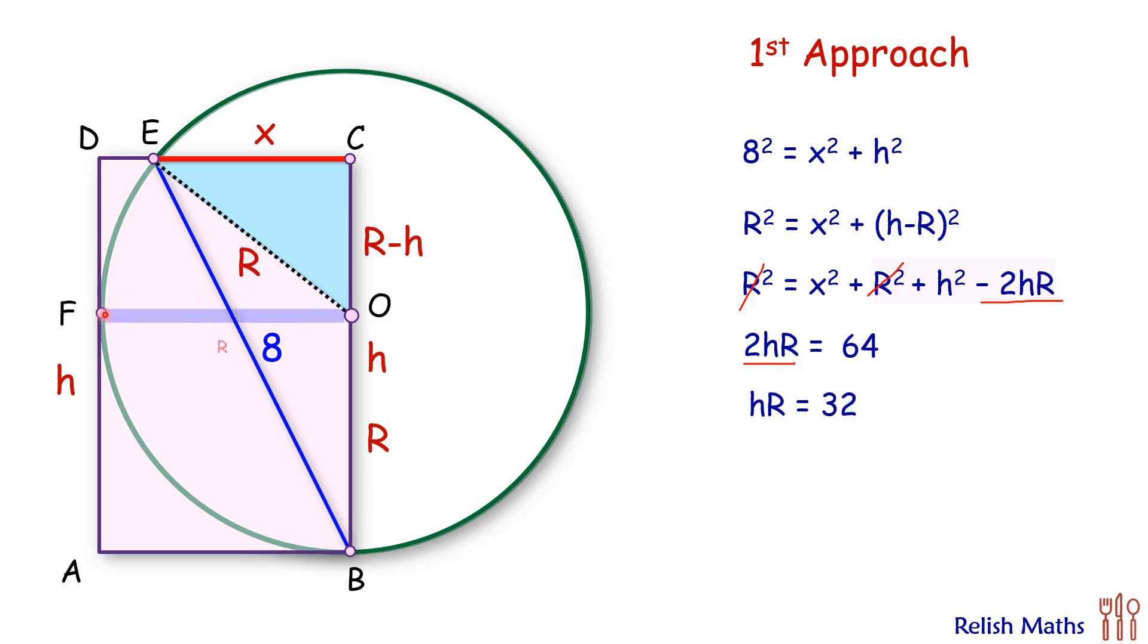Now if we see here, FO is the radius of the circle, so thus AB is also radius of the circle. In this rectangle, we get the length as h and width as R. So h times R is nothing but the area of the rectangle. So our answer, the area of rectangle, is 32 cm² and that's our answer.